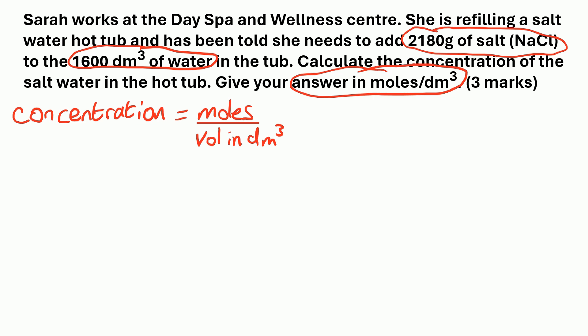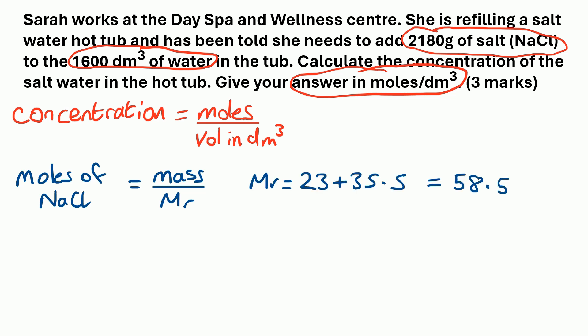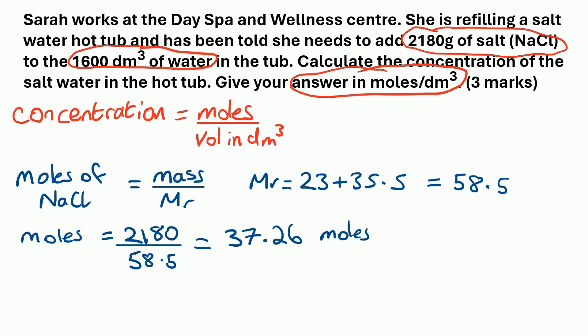In this question, the volume is already in dm³. So we need to work out the moles of NaCl first. We need to remember: moles equals mass over Mr. The mass is 2,180, but we need to calculate the Mr first. The Mr is the mass number of sodium, which is 23, plus the mass number of chlorine, which is 35.5 — both from your periodic table. That adds up to 58.5. So moles equals 2,180 divided by 58.5, giving us 37.26 moles of NaCl.